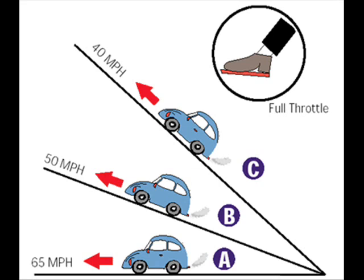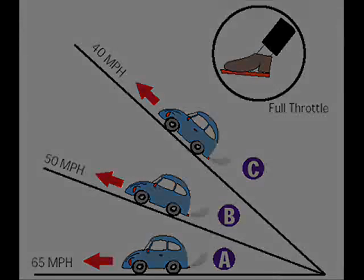A car traveling uphill is similar to an airplane in a climb. The only difference is that you, the pilot, choose the slope of the hill you climb. This is done by using the elevator control discussed earlier. On a level stretch of road, the maximum forward speed of the car with full power is 65 miles per hour, as shown by car A. Even with full power, the car starts to slow down as the hill steepens. Car B drops to 50 miles per hour, and an even steeper hill slows it to 40 miles per hour, as shown by car C. The limited horsepower simply can't match the drag caused by wind resistance plus the rearward-acting weight as the hill steepens, so the car slows.